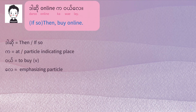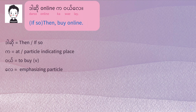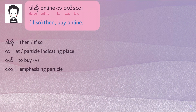Then the man said, 'Daso online ga weh li.' 'Daso' means 'then' or 'if so.' 'Weh' is to buy. 'Online ga' — 'ga' is a particle that indicates place, basically meaning 'at.' So 'online ga weh' means 'buy online.' 'Li' is a particle that emphasizes the sentence with a hint of suggestion in this context — like he's suggesting to buy online: 'Online ga weh li.'